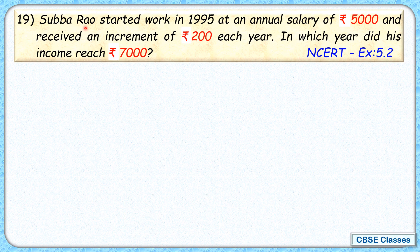Given: Mr. Rao started working in 1995 at a salary of Rs. 5,000, and every year he gets an increment of Rs. 200. So he gets a salary of Rs. 5,200 in 1996, Rs. 5,400 in 1997, and so on. We need to find in which year his income will be Rs. 7,000.